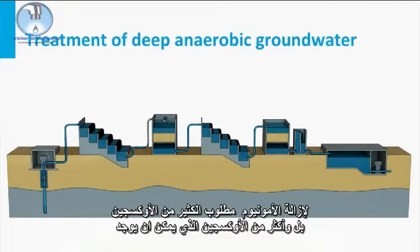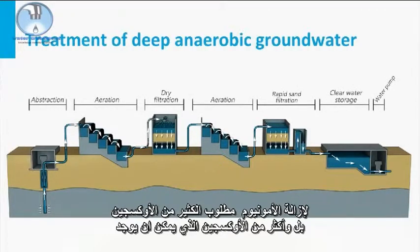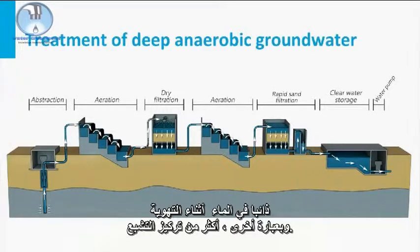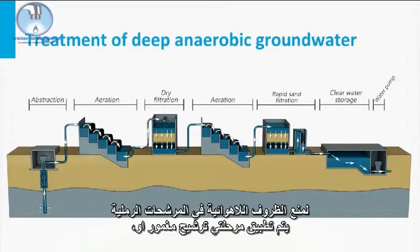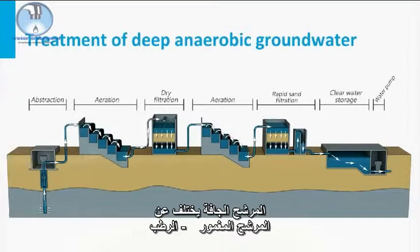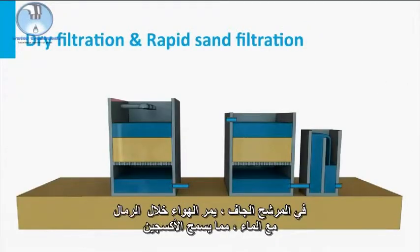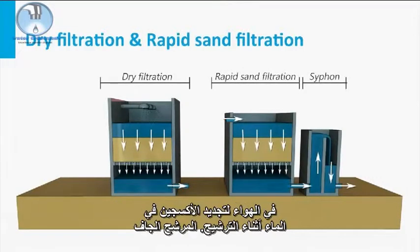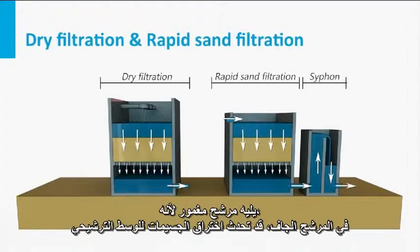For the removal of ammonium, a lot of oxygen is required — even more than can be dissolved in the water during aeration, in other words, more than the saturation concentration. To prevent anaerobic conditions in the sand filter, double submerged filtration or dry filtration can be applied, followed by regular submerged filtration in cases of high ammonium concentrations. In a dry filter, air passes along the sand grains together with the water, allowing oxygen in the air to replenish the oxygen in the water during filtration. Dry filtration is followed by submerged filtration because in a dry filter, breakthrough of particles may occur.